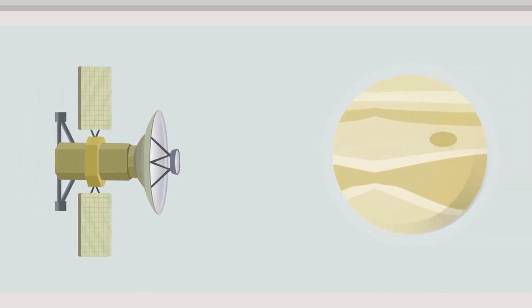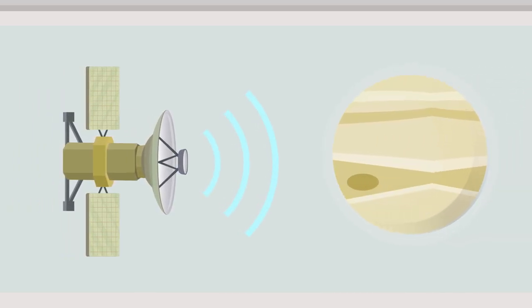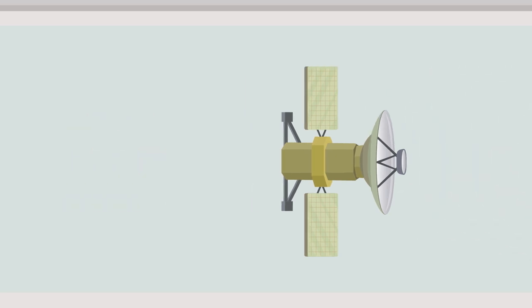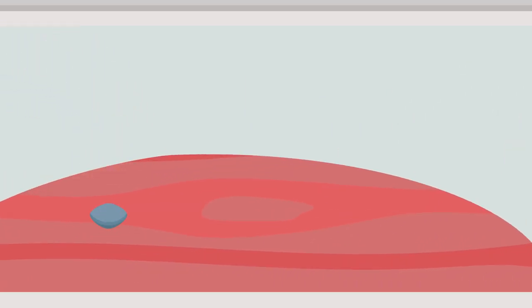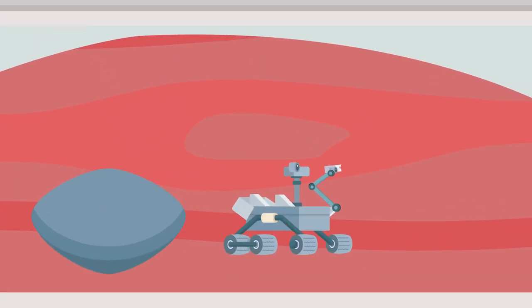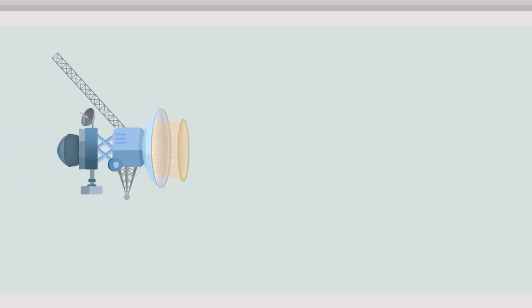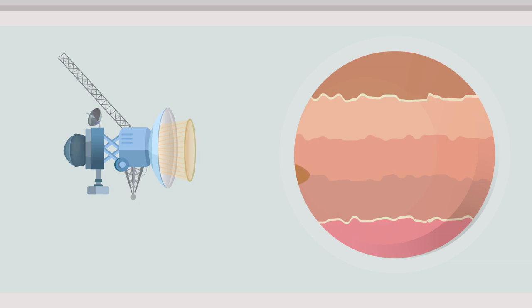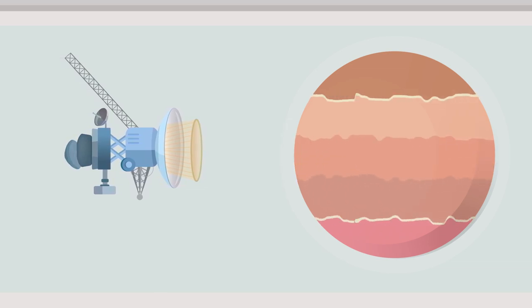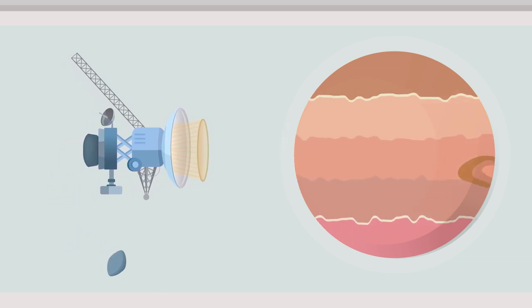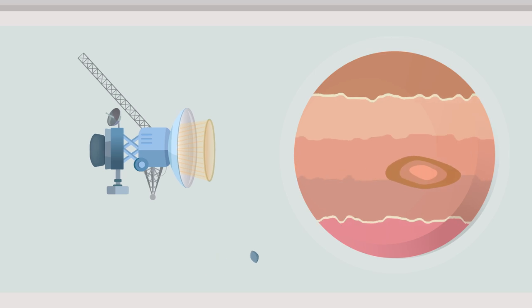Magellan was used to explore Venus. It used radar to map the surface of Venus. Pathfinder was used to make an unmanned landing of the Sojourner robot on the surface of Mars. Lastly, Galileo was used to explore Jupiter and its moons, and was the first ever space mission to drop a probe into Jupiter's atmosphere.